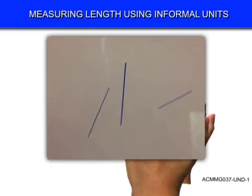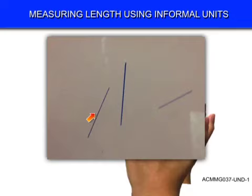Now let's have a look at using something like a piece of string. That's an interesting one, and it's very useful for when you're trying to compare different objects. You can see I've got three lines here and I'm not really sure which one is the longest. I could probably guess that this one is probably the shortest one. But because of the way these lines are sitting, I'm not sure which one of these two is the longest. So a piece of string is very useful for working that out. Let's play this little video and see how to use the piece of string to do that.